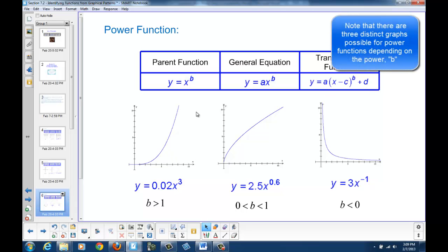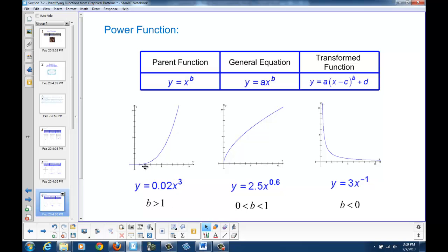We have three possible scenarios in a power function. We can have our power, our b value, be larger than 1, in which case our graph will go through the origin and increase with a concave upward shape, concave up.